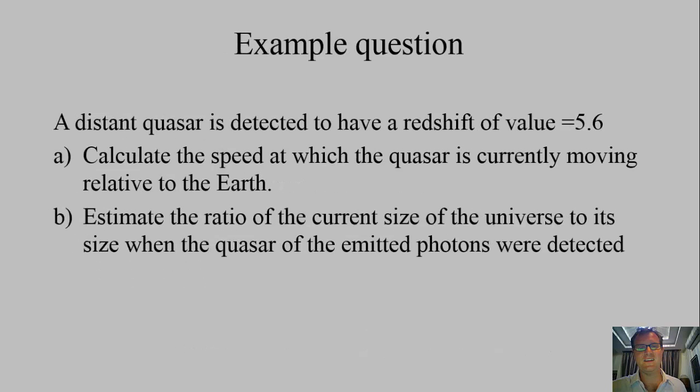So my example question: a distant quasar is detected to have a redshift value of 5.6. Calculate the speed at which the quasar is currently moving relative to the earth and then estimate the ratio of the current size of the universe to its size when the quasar emitted photons were detected. Okay, so the first part A is going to use Hubble's law and part B you're going to see is going to use the cosmic scale factor.